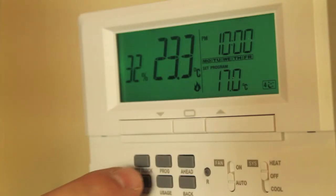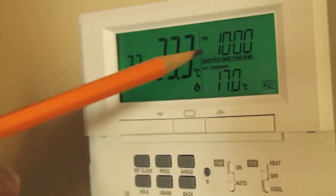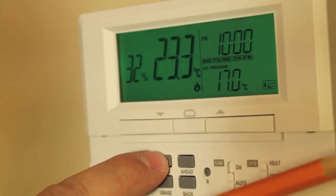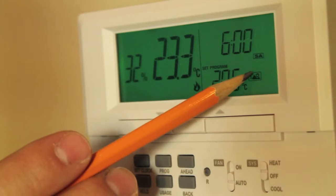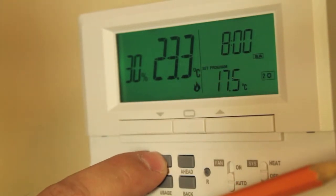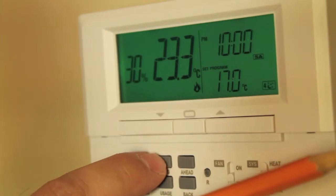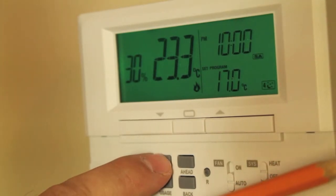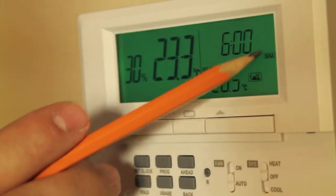After programming program four for the weekdays on the M6007, when you press program again it moves you to program one for Saturday only. Advancing through the programs one, two, three, and four for Saturday, if you press program again you can get to program one for Sunday.